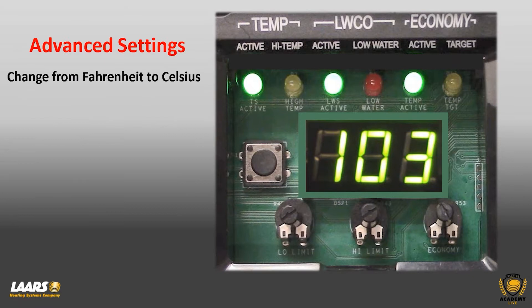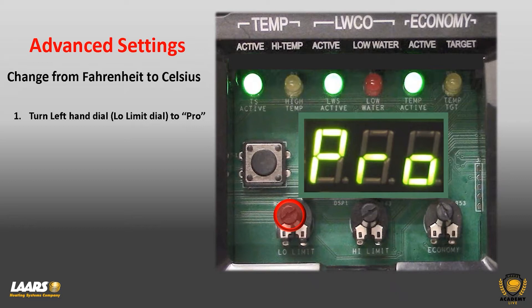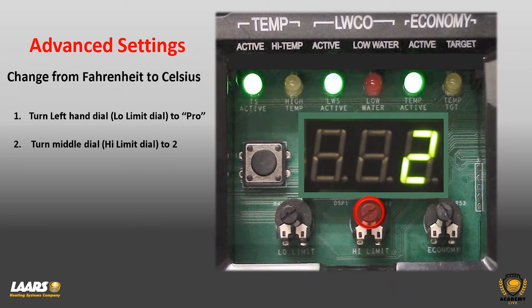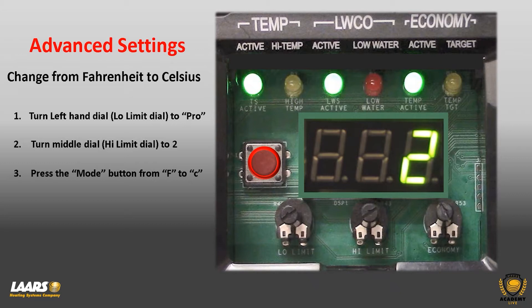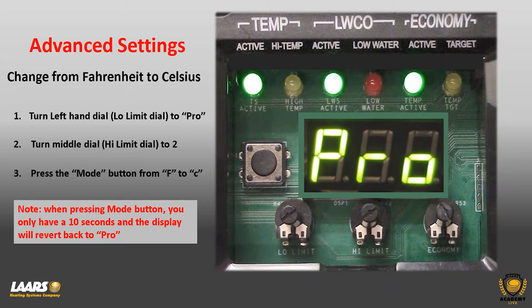To change from Fahrenheit to Celsius, start with the left-hand dial and turn it until you see the letters PRO for programming on the display. Next, choose the middle dial and turn it to the number two. Now use the mode dial — caution: if it sits idle for 10 seconds it will revert back to PRO. Press it once and you'll see the letter F for Fahrenheit; press it a second time and you'll see lowercase C for Celsius. Be patient and it will revert back to programming in 10 seconds.